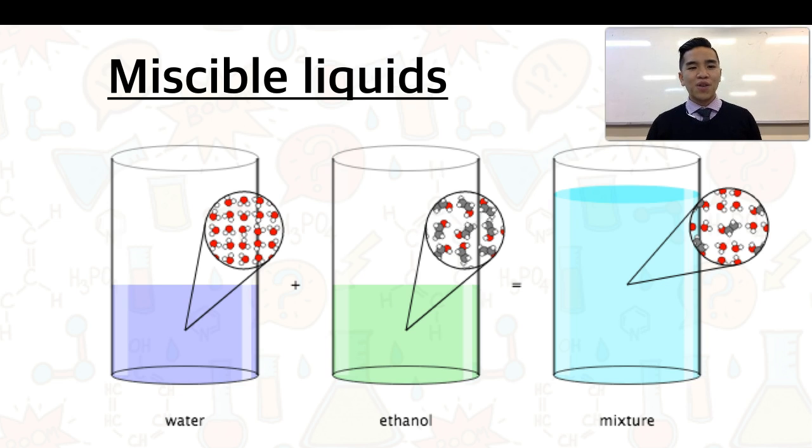An example of a miscible liquid with water is ethanol. We know ethanol is an alcohol. Ethanol molecules have a polar OH group or polar hydroxyl group, which is capable of forming quite strong interactions with water. In actual fact, this can form strong hydrogen bonding with water. In order for water to dissolve ethanol, water molecules will have to disrupt some of these forces between ethanol molecules.